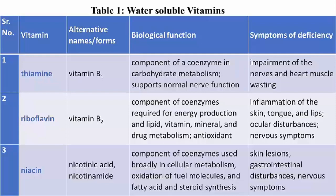Thiamine (vitamin B1) functions as a component of a coenzyme in carbohydrate metabolism. The symptoms of its deficiency include impairment of the nerves and heart muscle wasting. Riboflavin (vitamin B2) is very important for energy production, lipid and vitamin and mineral absorption, drug metabolism and as an antioxidant component of coenzymes. Deficiency causes inflammation of the skin, tongue and lips, and other nervous disorders.